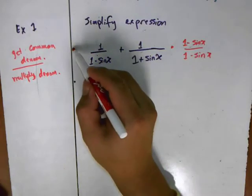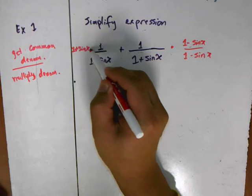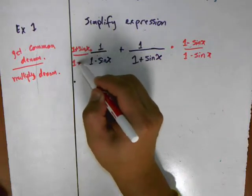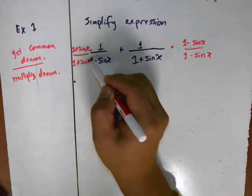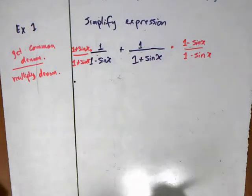On this side here I'm going to multiply it by 1 plus sine x over 1 plus sine x. My writing is a little bit squashed in here but hopefully you can still see what I'm writing.